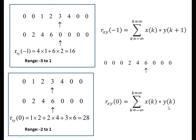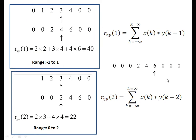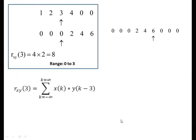For the delayed versions, we perform the delay operation. For y(k minus 1), shift the arrow to the left by 1 unit. The signal starts from {2, 4, 6} with range minus 1 to 1. For y(k minus 2), shift arrow left by 2 units; signal starts from 2, range 0 to 3. In this way we get the element-wise multiplication and the complete answer for R_xy(n) from minus 2 to plus 3.